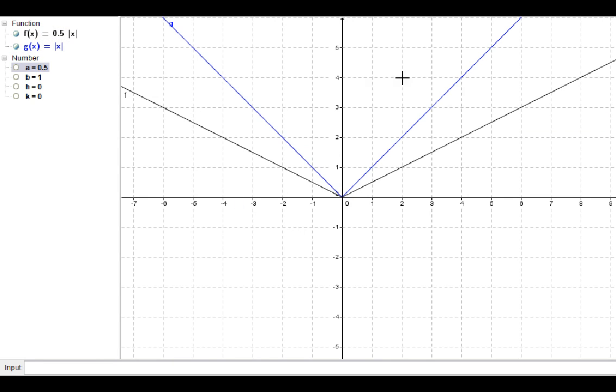So this is a non-rigid transformation. Because I've changed the rigid shape of the absolute value. It's still a v. It's just got a different slope because of what I've done with my a. And that's how we stretch and compress vertically. And again, remember, we knew it was vertical because it was outside of the absolute values.